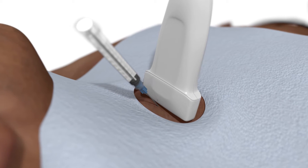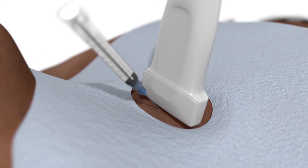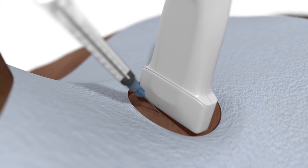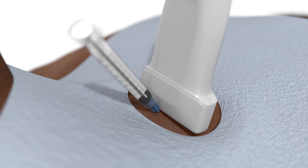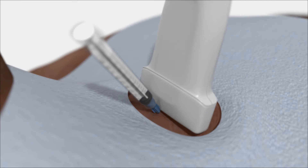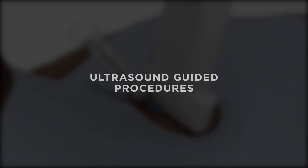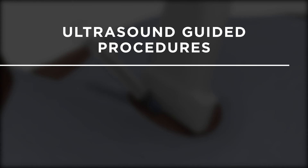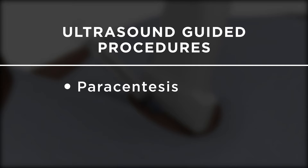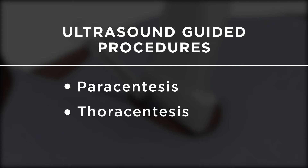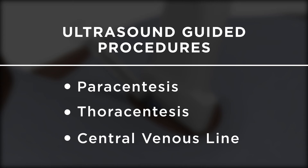Ultrasound guidance has been shown to improve patient safety and reduce the duration of many common inpatient and office-based procedures. In this exercise, we will give an overview of three guided procedures that are routinely included in residency curricula: paracentesis, thoracentesis, and central venous line placement.